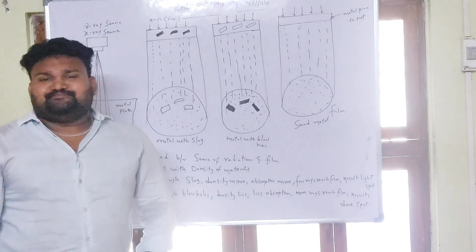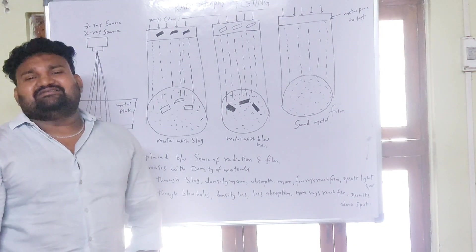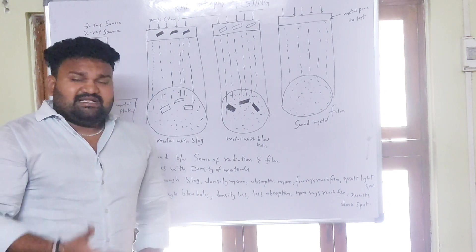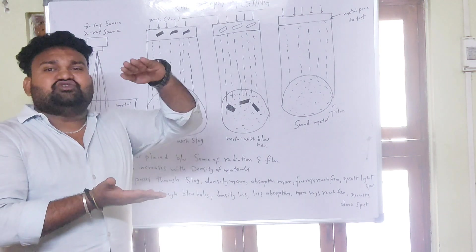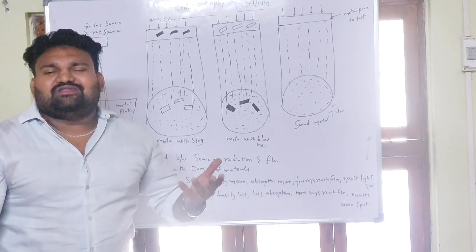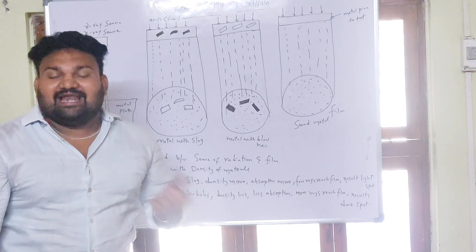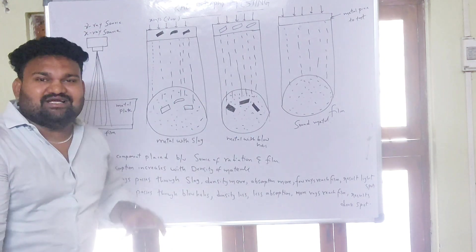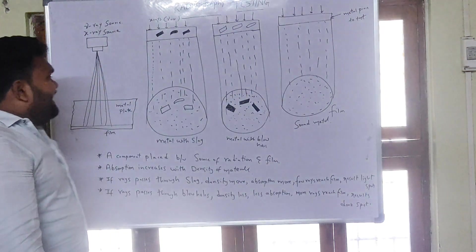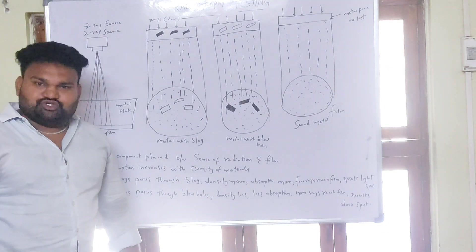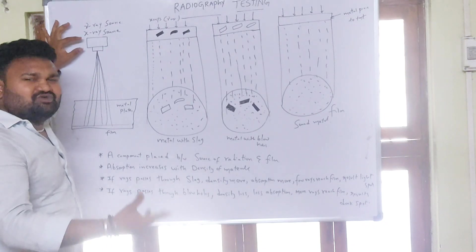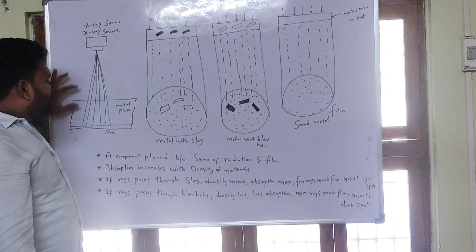In radiography testing, X-rays or gamma rays are used. There is a source and a workpiece. The source emits rays through the workpiece. The film is placed on the other side of the workpiece. X-ray radiography uses X-rays, and gamma ray radiography uses gamma rays. The source rays pass through a metal plate.